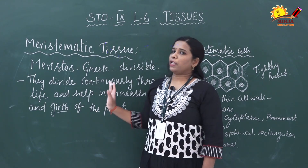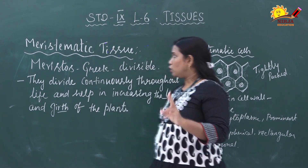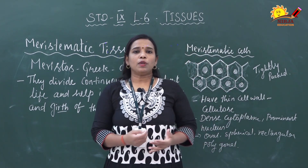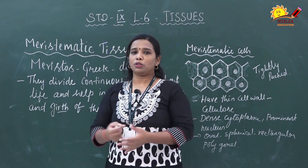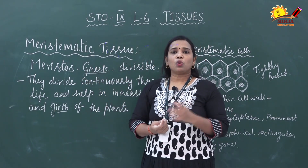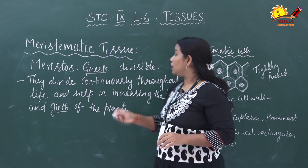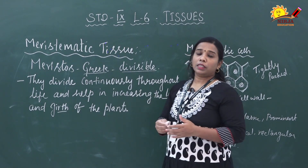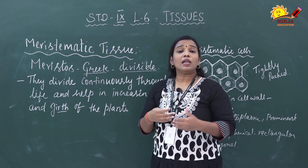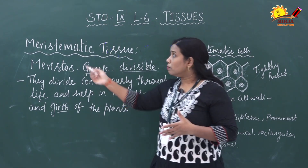We are starting with plant tissue. Plant tissues are mainly classified into two types: meristematic tissue and permanent tissue. First we are going to discuss meristematic tissue. The word 'meristematic' comes from the Greek language — 'meristos' — which means 'divisible.' So meristematic tissue means it will continuously divide.